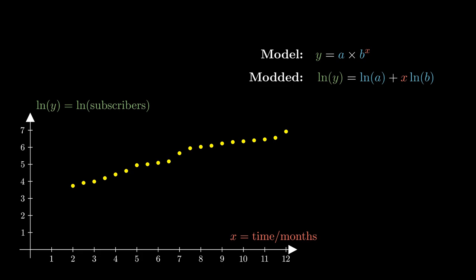The data points after modification resemble that of a straight line. This suggests that we should model these points using a best-fit line.